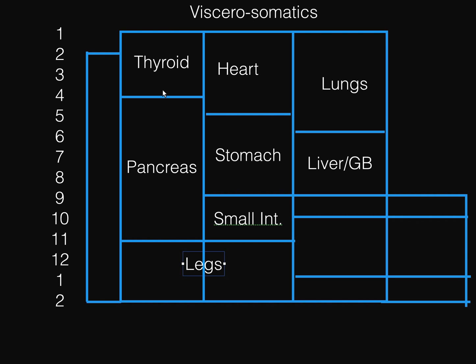Looking at the ranges: from T1 to T4 we have the thyroid; from T1 to T5 we have the heart; from T1 to T6 we have the lungs. The pancreas is a bit different — it's from T5 to T11. I like to draw a dashed line and color it in so I know it's from T5 to T11. From T5 to T9 you have the stomach, from T6 to T9 you have the liver and gallbladder, from T9 to T11 you have the small intestine, and from T11 to L2 you have the legs. At the end I'll put up a picture of the visceral somatic chart so you can see how it all matches up.